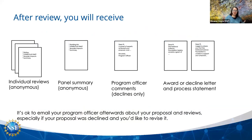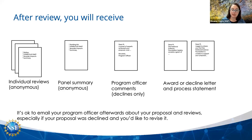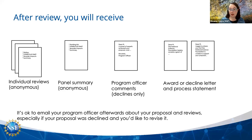So you've submitted a clear, coherent, compliant proposal — what happens next? At the end of the review process, you will receive the individual reviews from each of your reviewers, anonymized. If your proposal was discussed in a panel, you'll get a summary of that discussion called the panel summary. If your proposal is being declined, you will also get the program officer's analysis, called the program officer comments. You will receive either an award or decline letter and a process statement about how your proposal was reviewed. It is encouraged to email your program officer afterwards about your proposal and the reviews, especially if you'd like to revise and try again.